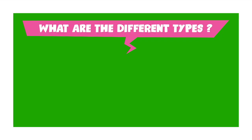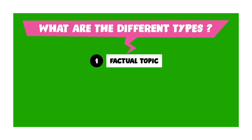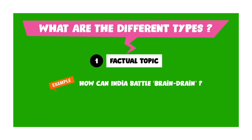Next, I'm going to talk about the different types of GD that you might come across. The first one is a factual topic. You will be given topics which can be researched — the evidence is there all around you and it is based on facts that you can prove or disprove. Here is an example: How can India battle brain drain? Note that this topic ends with a question mark, which means the panel wants you to provide some answers to this problem — what can India do to stop smart intellectual people from leaving the country, and what can be done to get back the people who have already left?